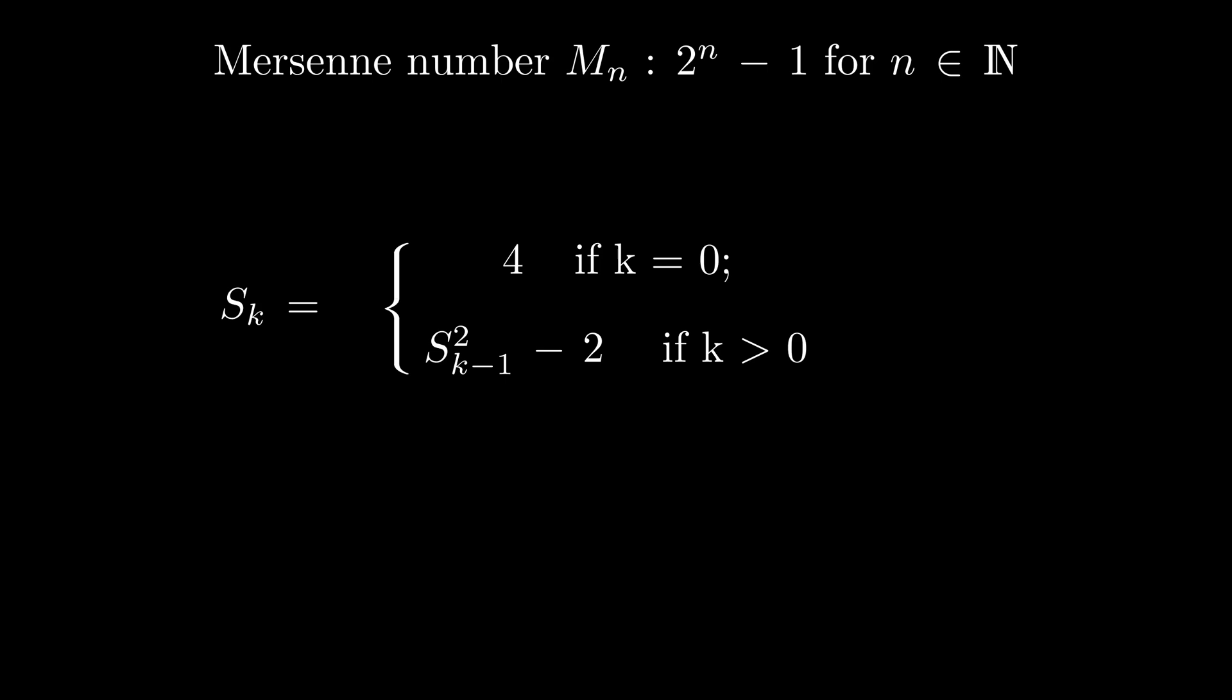If p is an odd prime, then the Mersenne number M_p is a Mersenne prime if and only if M_p divides s_{p-2}, the (p-2)th term of the sequence.